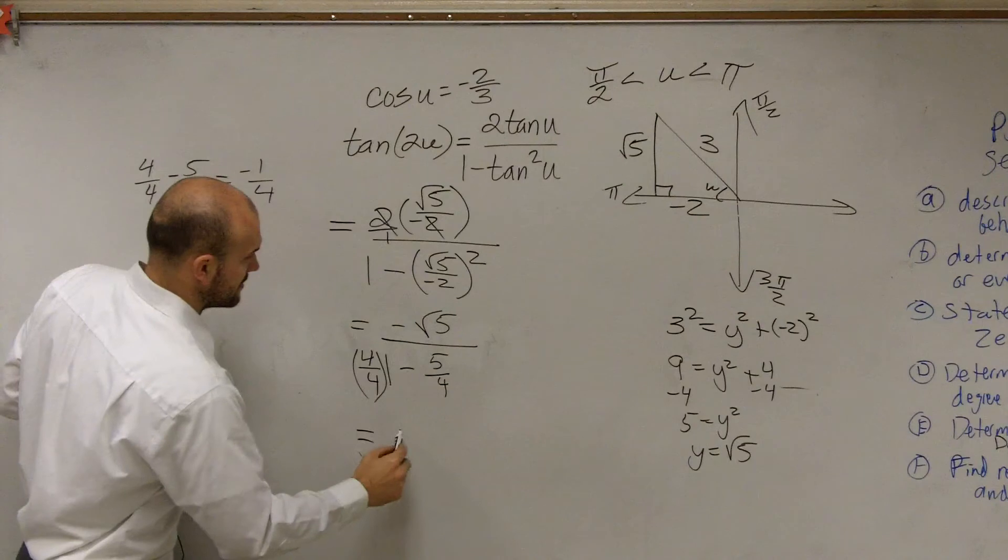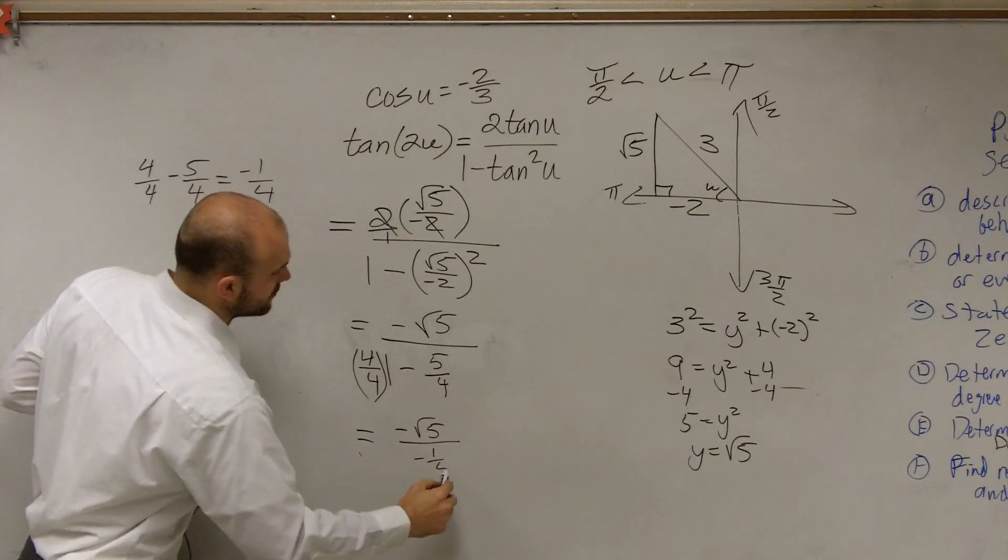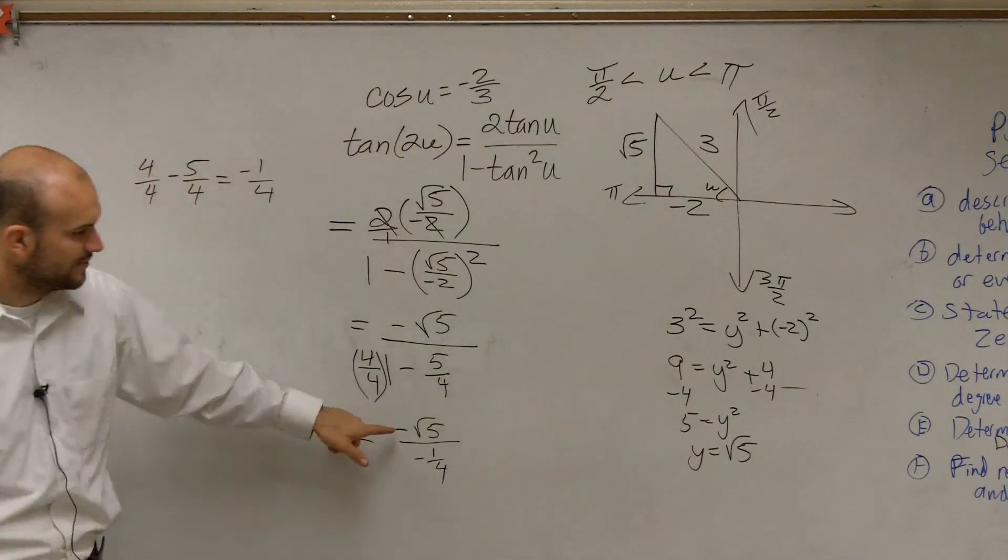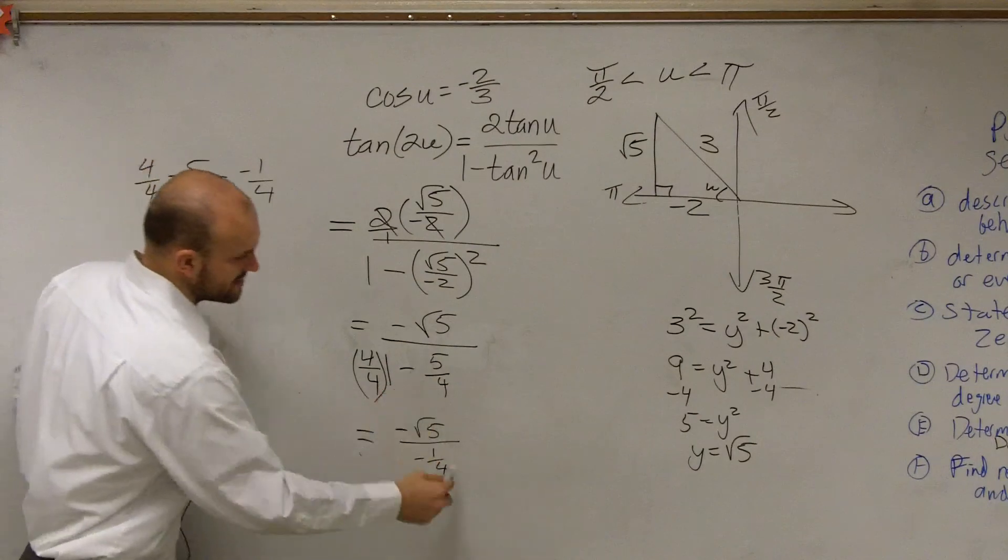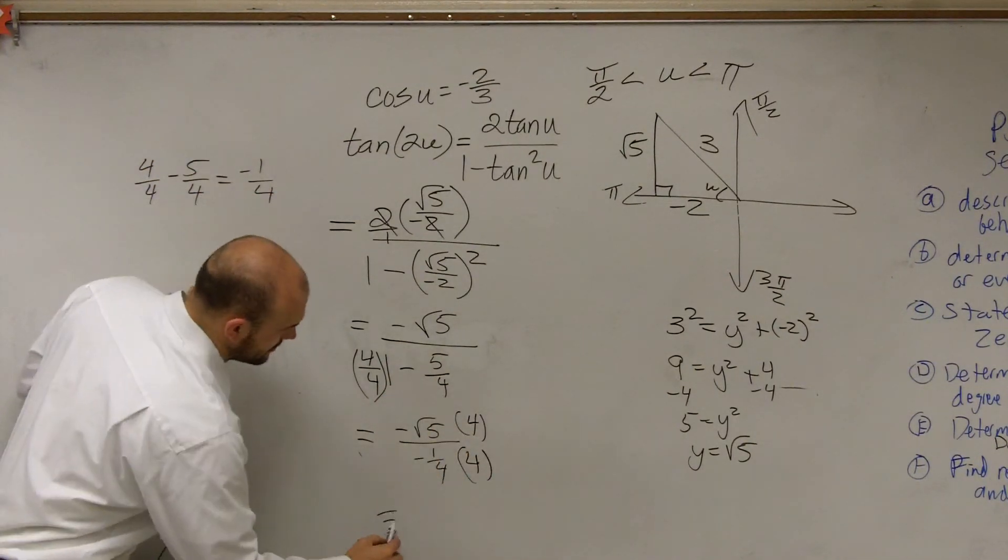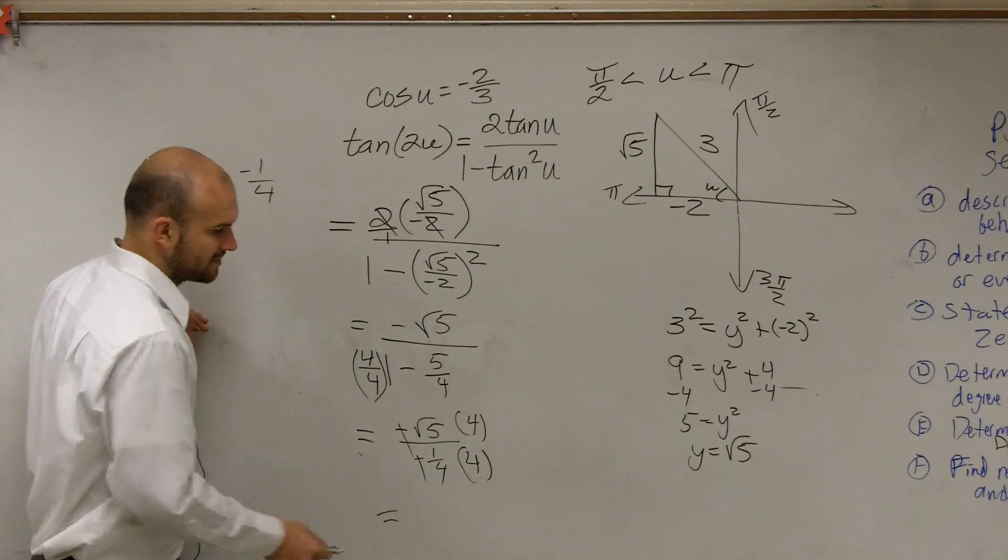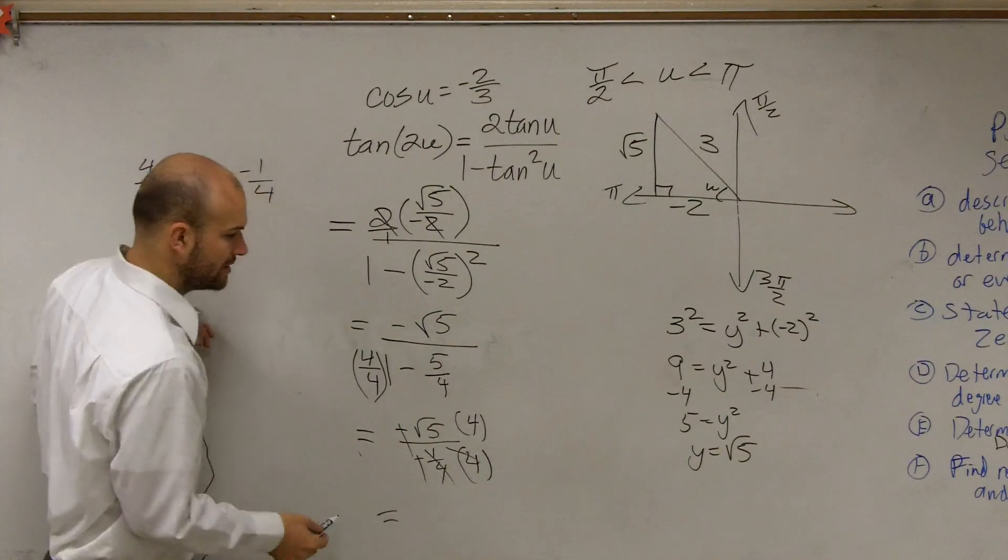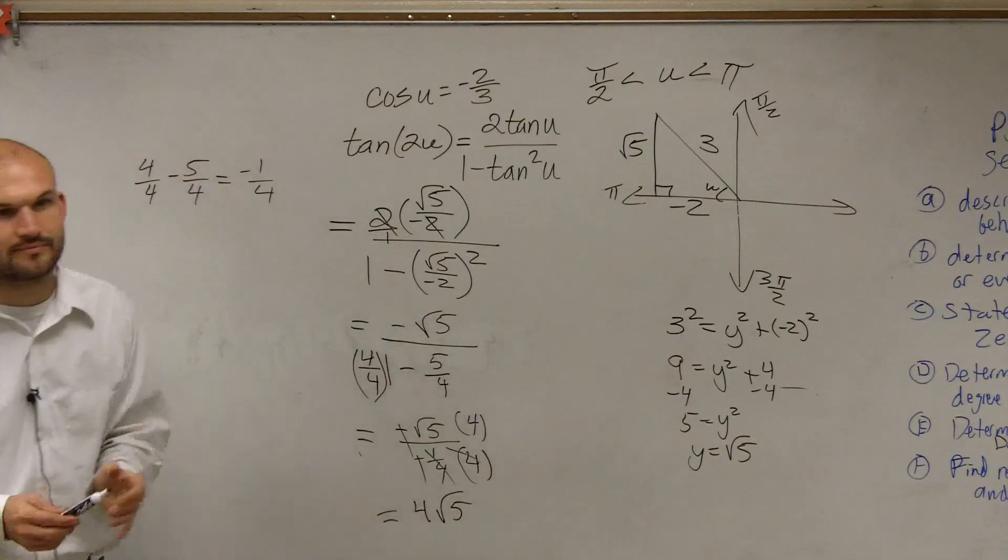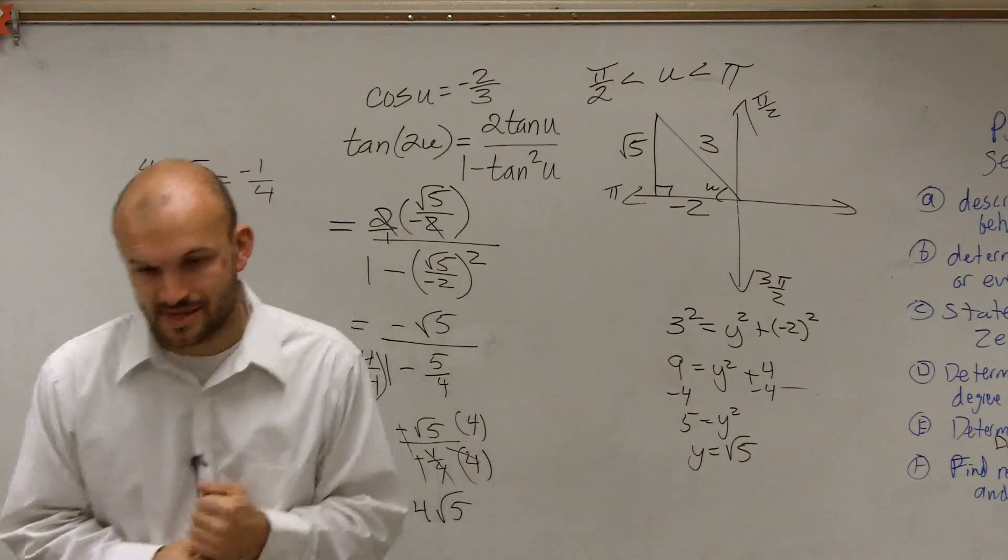So now I have -√5 over -1/4. To get that off the bottom, I can multiply. First of all, we see that the negatives cancel out. But I'll multiply by 4 on the top and the bottom. My negatives are now going to divide to a positive. That multiplies to 1, and I'm finally left with a final answer of 4√5. So it's some algebra you guys are going to get some practice on.